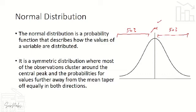Another description for a normal distribution: it is a symmetric distribution where most of the observations cluster around the central peak. Majority of the probability is equal to the mean, and for values further away from the mean, they taper off equally on both directions — higher and lower probabilities are distributed equally to the left and right.